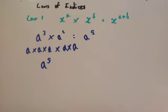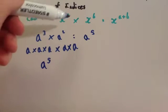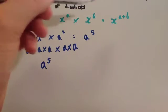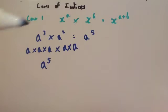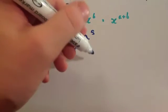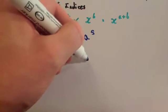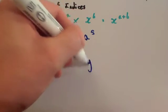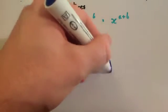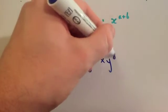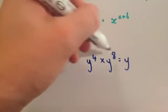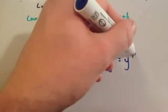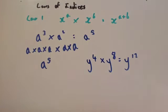You can look at other examples, but the law is x to the power of a times x to the power of b is x to the power of a plus b. So if you had another example, something like y to the power of 4 times y to the power of 8, you would add the powers, so you get y to the power of 4 plus 8, which is 12. So the answer would be y to the power of 12.